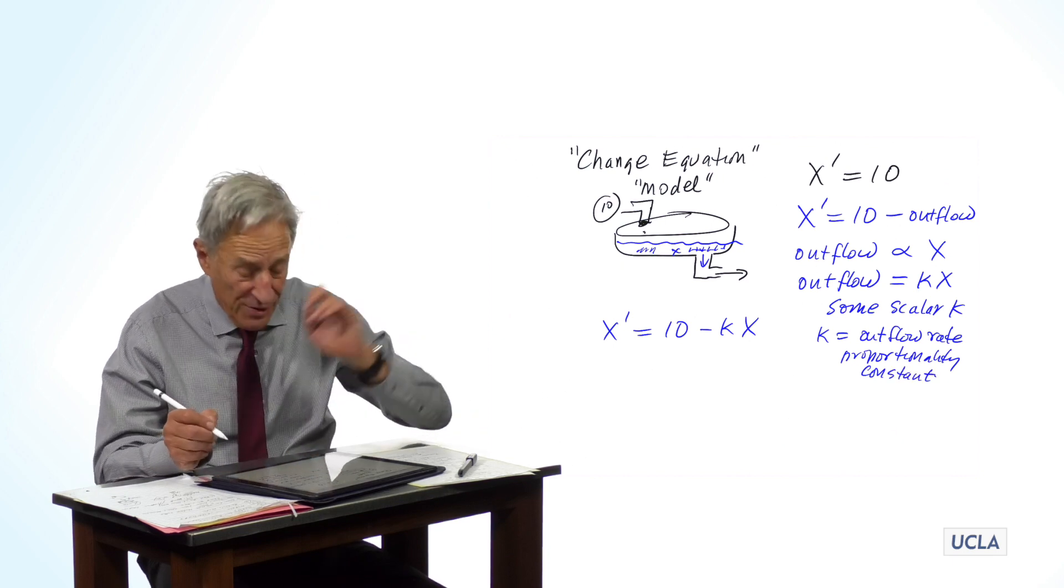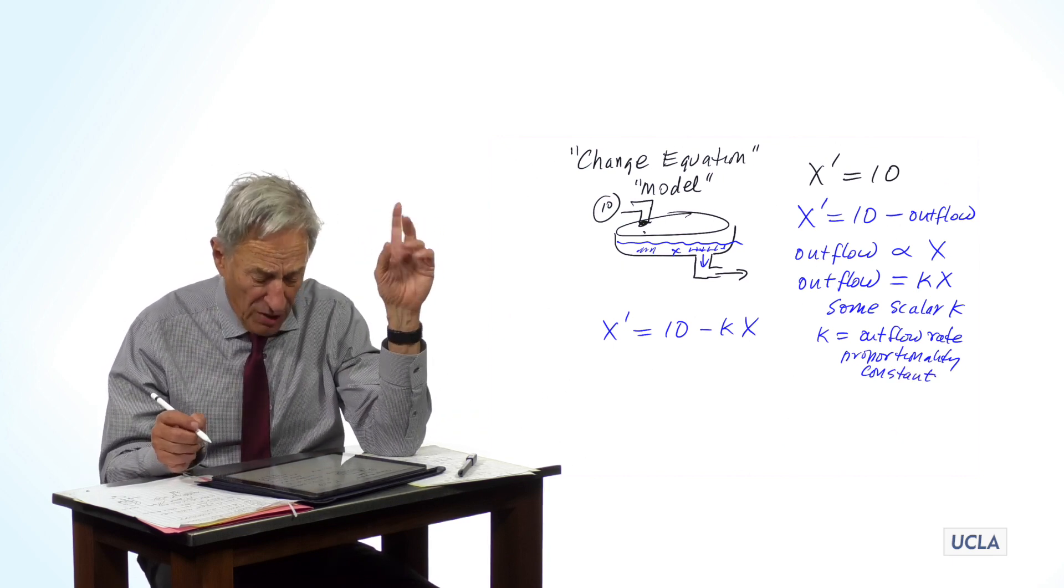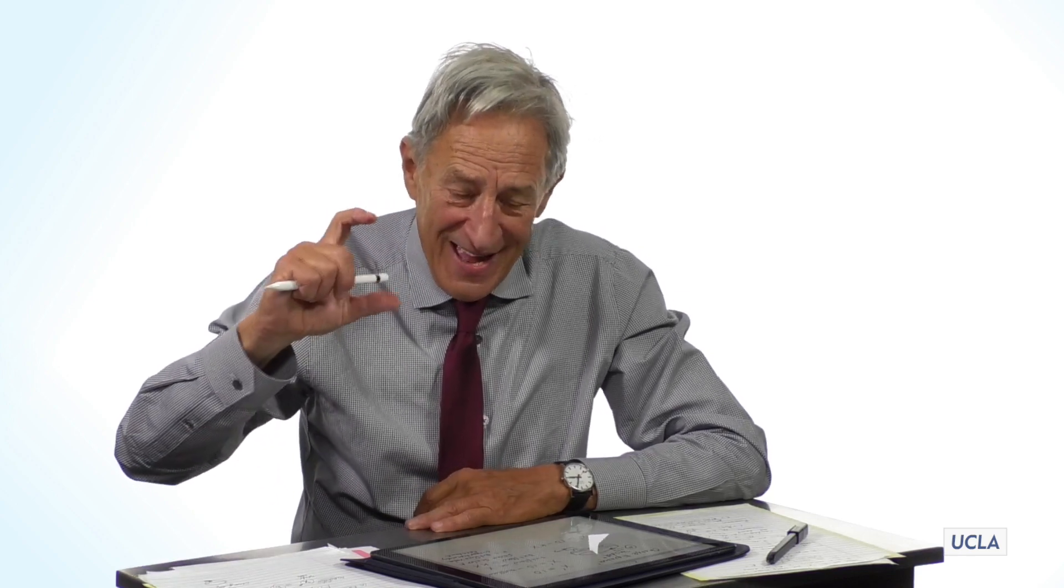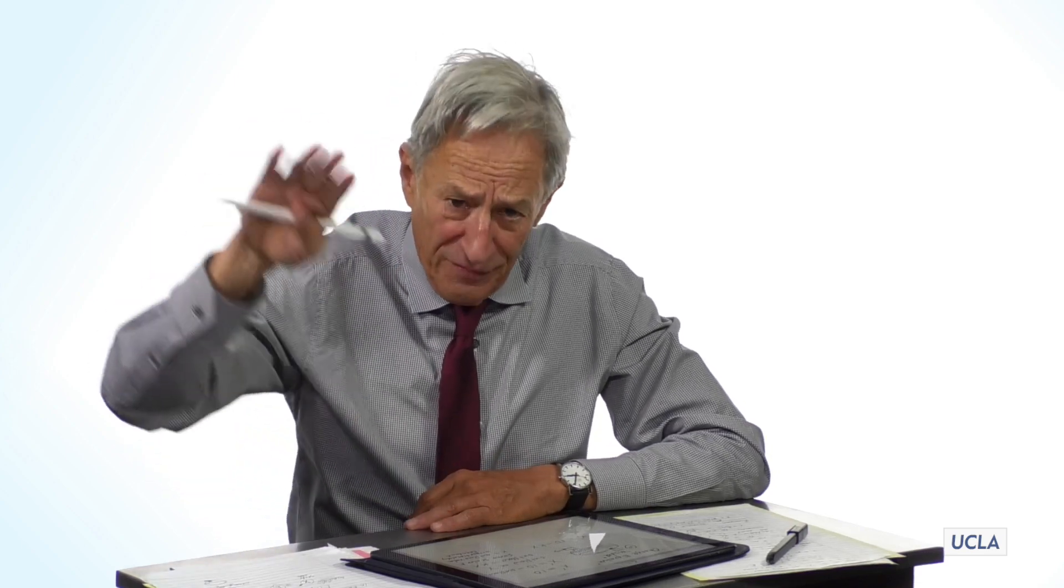And k is the outflow rate proportionality constant. What determines the value of k? Clearly, it's the width of this outflow pipe. If the outflow pipe is very wide, k is very large, and the water is lost very quickly. If the outflow pipe is very narrow, then k is very small, and the water is lost very slowly.